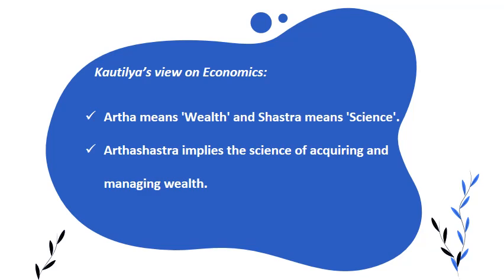We will study Kautilya's view on economics. Kautilya was a great philosopher and economist during the Maurya period, also known as Chanakya. He defined economics as Artha Shastra — Artha means wealth and Shastra means science — so according to him, economics is the science of wealth. When you are studying the knowledge of wealth, you are understanding economics.